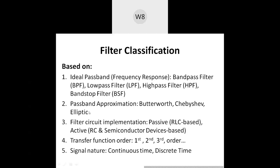Mathematically, when we try to represent this transfer function, it gets represented by only a few mathematical expressions. Those expressions were proposed by certain mathematicians — for example, Butterworth and Chebyshev. Based upon the mathematical nature of the transfer function, which is also called the passband approximation, the complete set of filters gets classified into these three categories. We will see later why we use the word 'approximation' here.